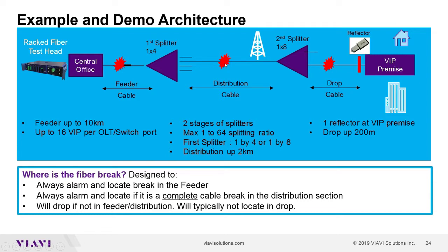If the fault is not in the feeder or distribution, the system will tell you there's a problem in the drop cable to the VIP premise. This helps ensure you dispatch to fix the right location and avoid unnecessary fiber handling and truck rolls. The passive network also has active elements — lasers in the OLT at the central office and ONTs at the premise — and the system helps demarcate between fiber faults and active equipment faults.